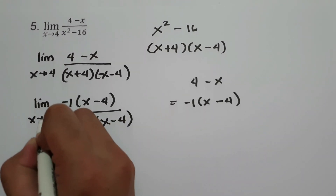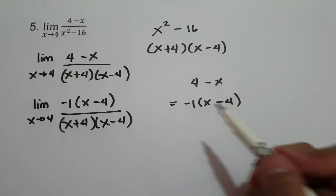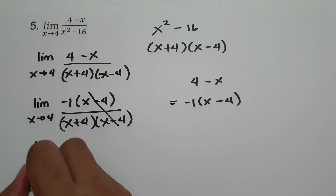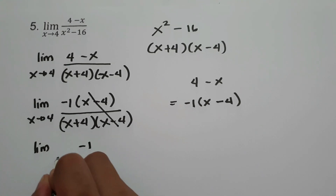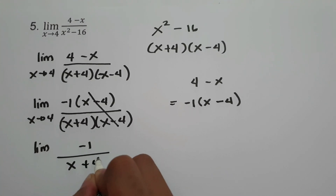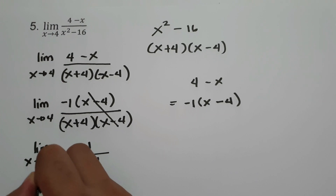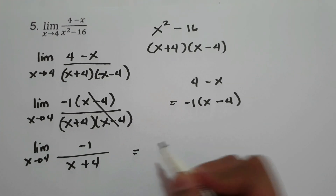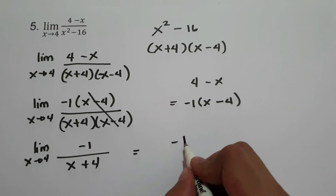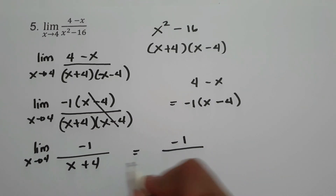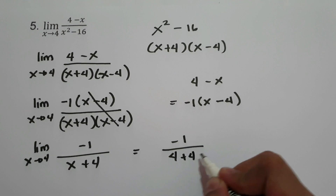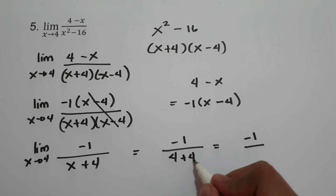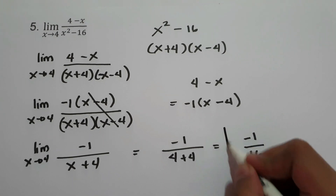So we have the limit of negative 1 times x minus 4 all over x plus 4 times x minus 4 as x approaches 4. We cancel x minus 4, leaving the limit of negative 1 over x plus 4 as x approaches 4. Substituting x equals 4: negative 1 over 4 plus 4 equals negative 1 over 8. So our final answer is negative 1 over 8.